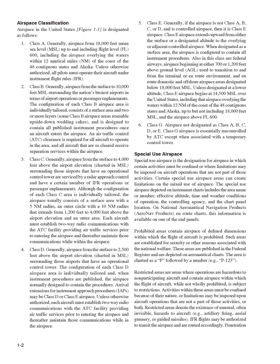Class G: airspace not designated as Class A, B, C, D, or E. Class G airspace is essentially uncontrolled by ATC except when associated with a temporary control tower.